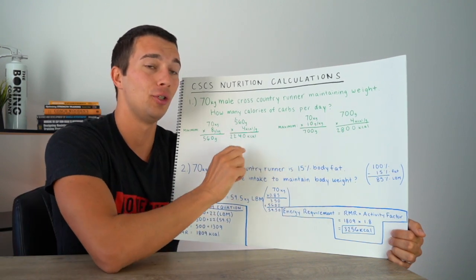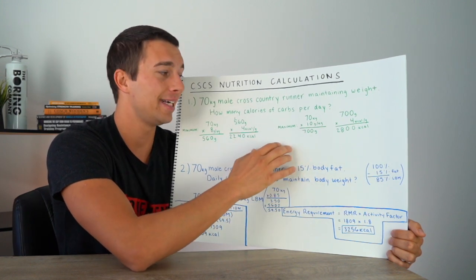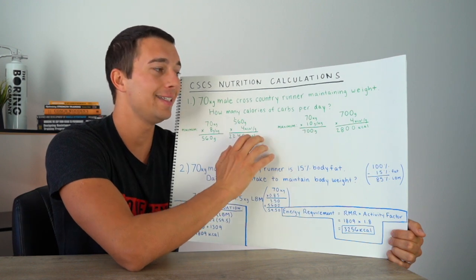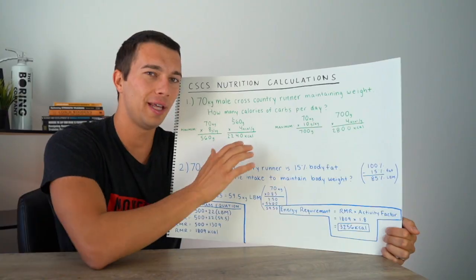Whichever of the answer choices is between these. So again, if we had A, 2,000 calories, B, 2,500, C, 3,000. In this case, we would choose B, 2,500 calories, because that intake is between this range. It's within the appropriate range. Hopefully that makes sense.